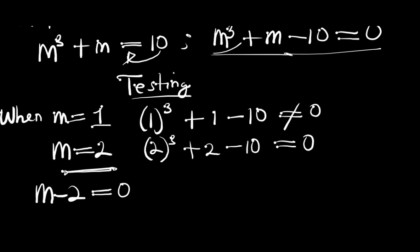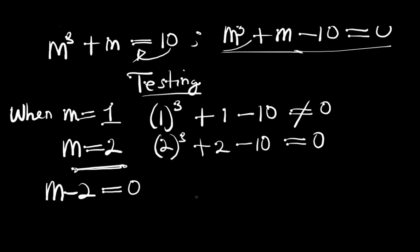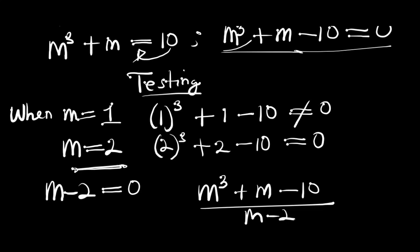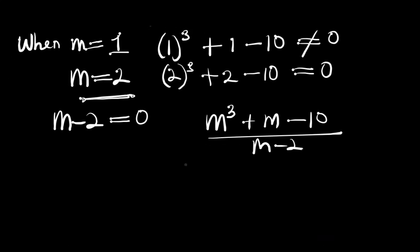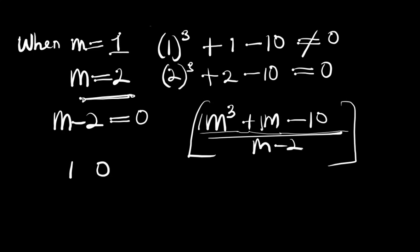Now let's find the other factors. We will divide m^3 + m - 10 by (m - 2) using the synthetic division method. Let's write out the coefficients of the numerator: the coefficient of m^3 is 1, there is no m^2 term so we have 0, the coefficient of m is 1, and the constant is -10.